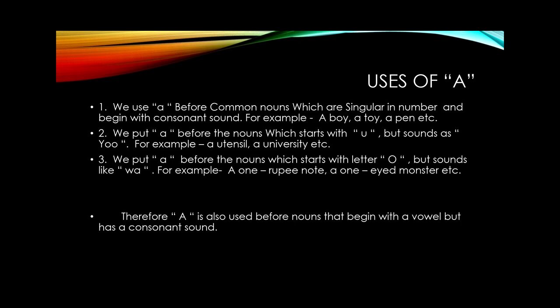So students, these are the main three uses of the article 'a'. Therefore, after reading all these uses, we have got the idea that 'a' is also used before nouns that begin with a vowel but have a consonant sound. I hope you have understood the uses of 'a'. Now let me proceed to the uses of 'an'.